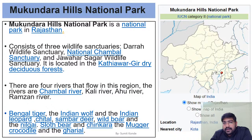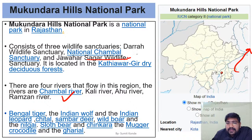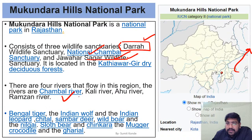Mukundra Hills National Park is located east of the Aravalli, near the Chambal River, which is the main tributary of the Yamuna. Important sanctuaries in this area include Darrah National Chambal Sanctuary and Jawahar Sagar Wildlife Sanctuary. These are the sanctuaries that form part of Mukundra Hills National Park.